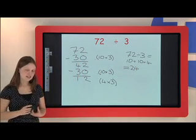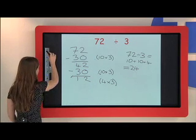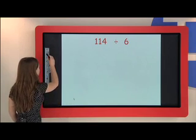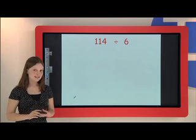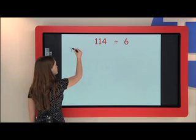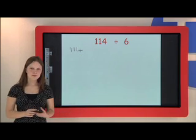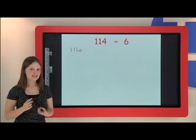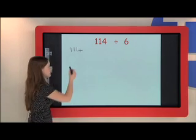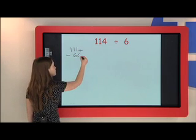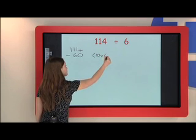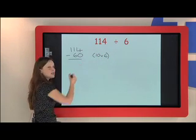So now we'll try a second example: 114 divided by 6. I start off again by writing 114. Then I think again, a really big number in the 6 times table that I can take away from 114. So I try 10 times 6, which is 60. So I take away 60, which is 10 times 6.